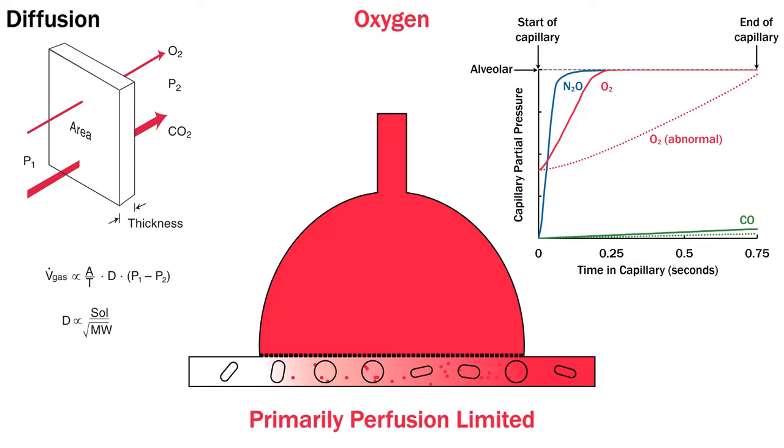Now, if you increase cardiac output and decrease transit time, there is no longer time for oxygen to equilibrate causing hypoxia. Classically, this will produce hypoxia on exertion. The effect will be further exaggerated by decreasing the partial pressure gradient, for example with altitude.